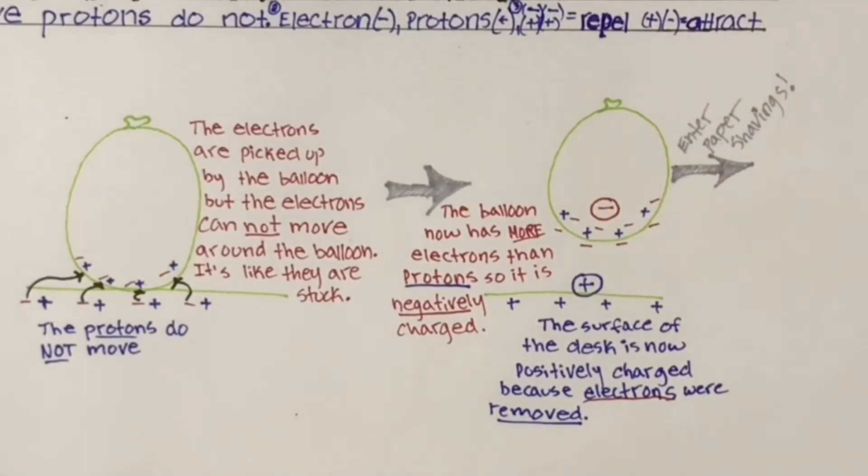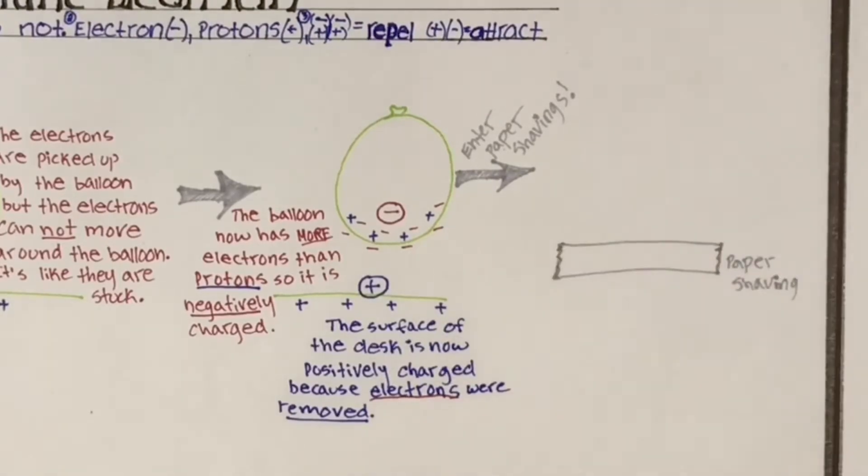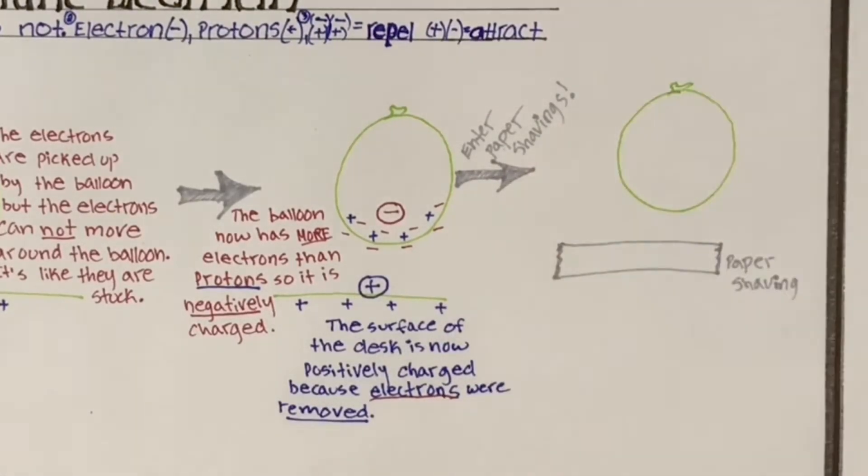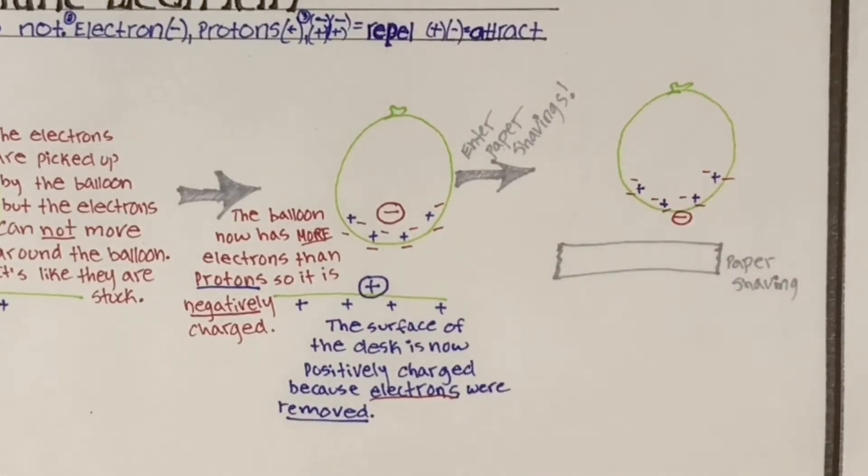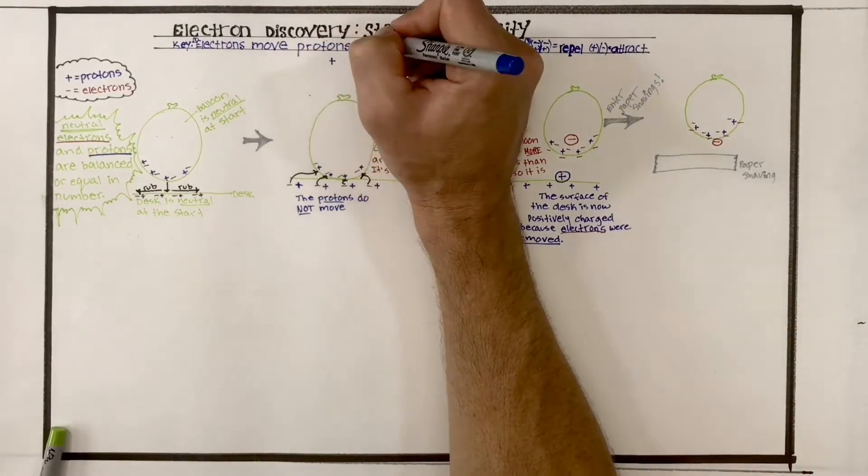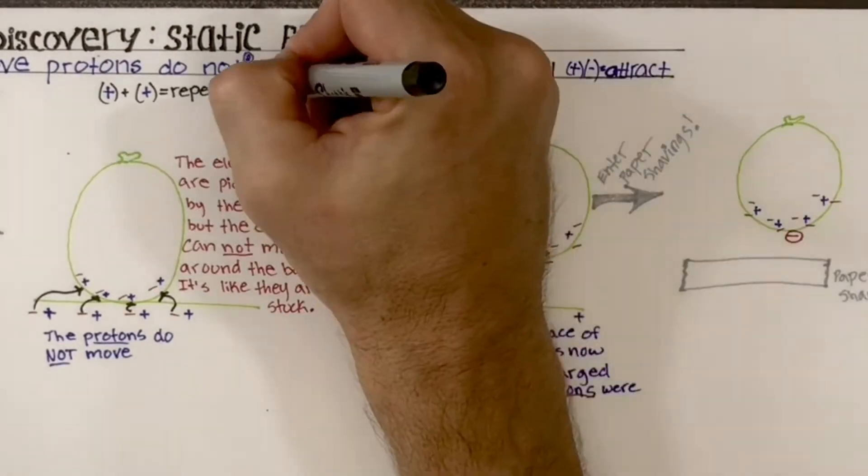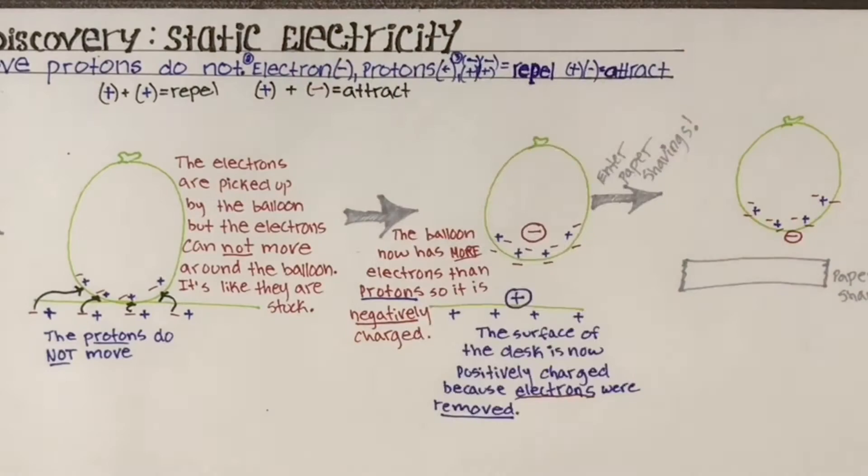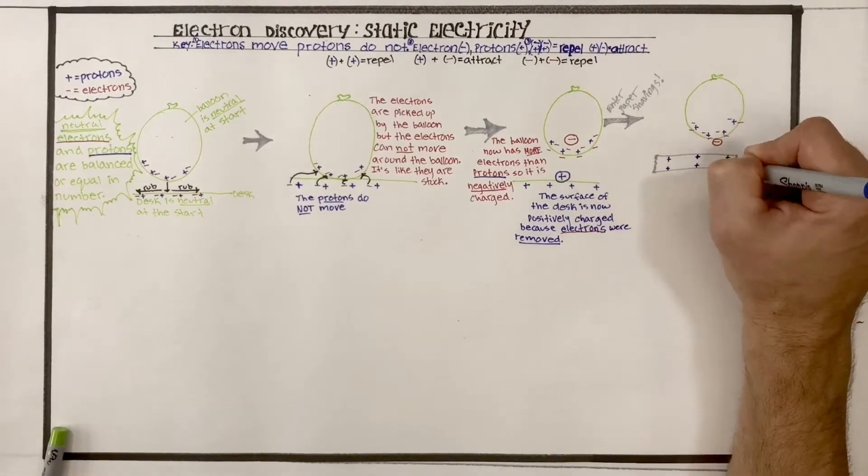Then we go to our next little frame. And now we enter our paper shavings. We have our little paper shaving on the desk and our balloon. So our balloon has positive protons and extra electrons on it. And as a little side note, positive positive repels, positive and negative attract, and negative negative repel.